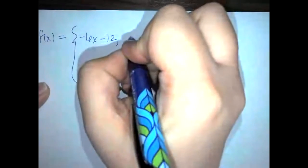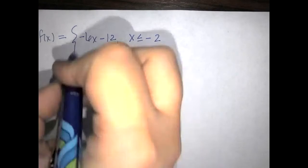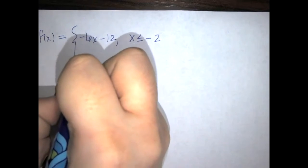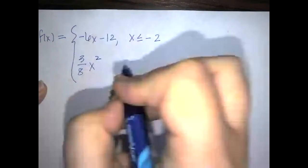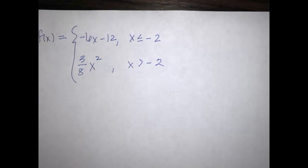Let's start with a piecewise function that has two pieces. The first piece is negative 6x minus 12, where x is less than or equal to negative 2. The second piece is 3/8 x squared, where x is greater than negative 2.